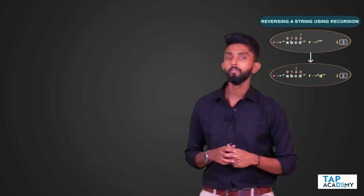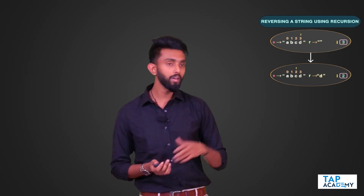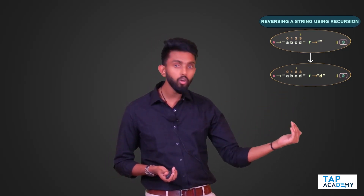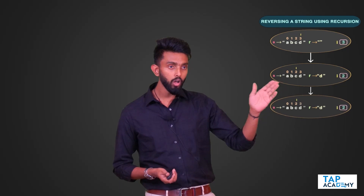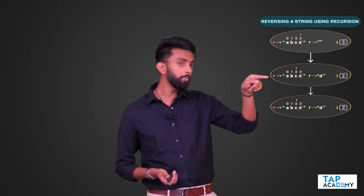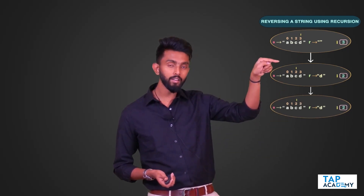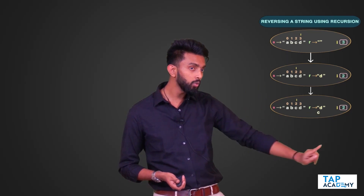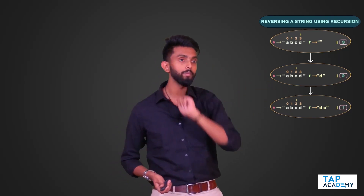Next, I call the function again with the same string. In the previous call `i` was at index 2 (character C). I concatenate that character to `R`, so `R` was 'D' and now becomes 'DC'. Then I reduce `i` by 1, so `i` becomes 1.